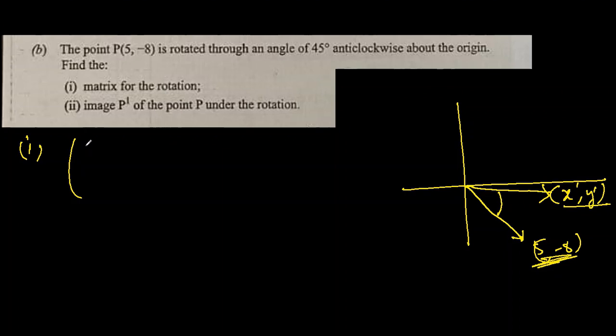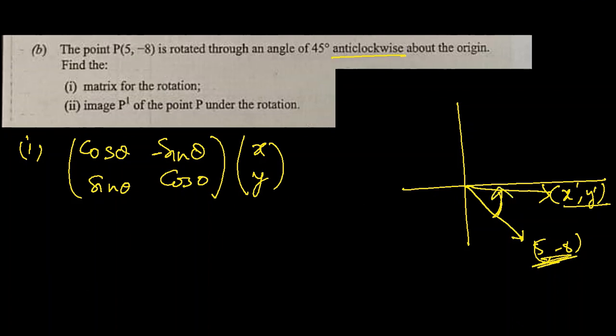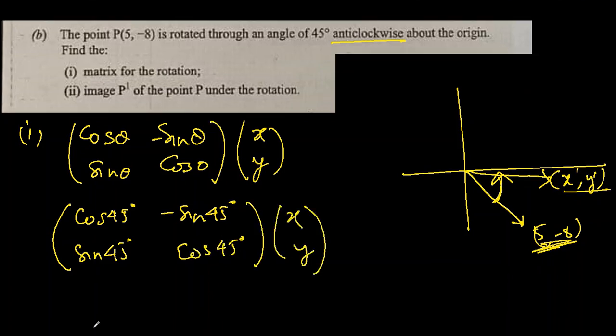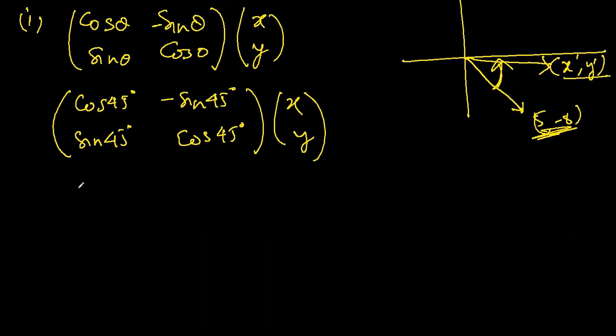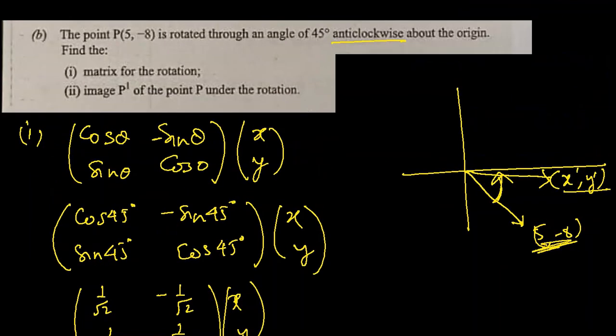The formula is cos theta on the diagonals and sine theta on these diagonals, but this one will be negative, then we write x, y. We know the angle is 45 degrees anticlockwise, positive side, so we write cos 45 degrees, minus sine 45 degrees, sine 45 degrees, and cos 45 degrees times x, y. Let's give them values now. Cos 45 and sine 45 are both 1 over square root 2. This is the answer for part 1, the matrix for the rotation.